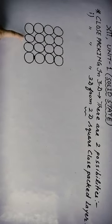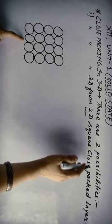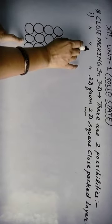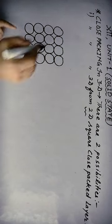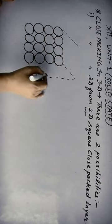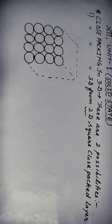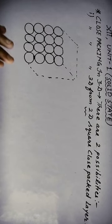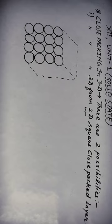First is 3 dimensional closed packing from the 2 dimensional square close packed layer. Here we have drawn a 2 dimensional square close packed layer. To derive closed packing in 3 dimension, we extend this structure. We place the second layer on top of the first layer so that the spheres of the second layer are exactly above the spheres of the first layer, aligned both horizontally and vertically.